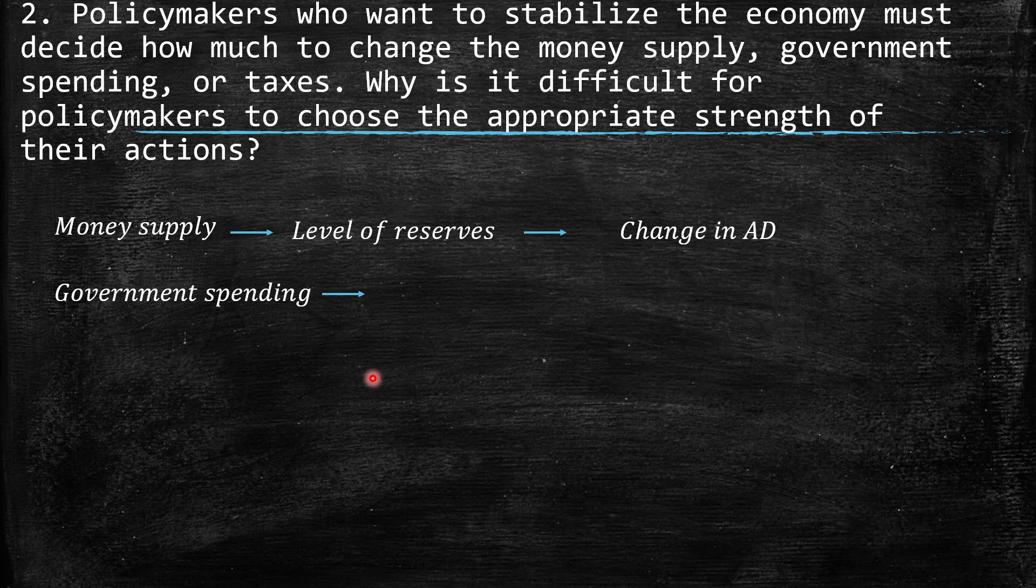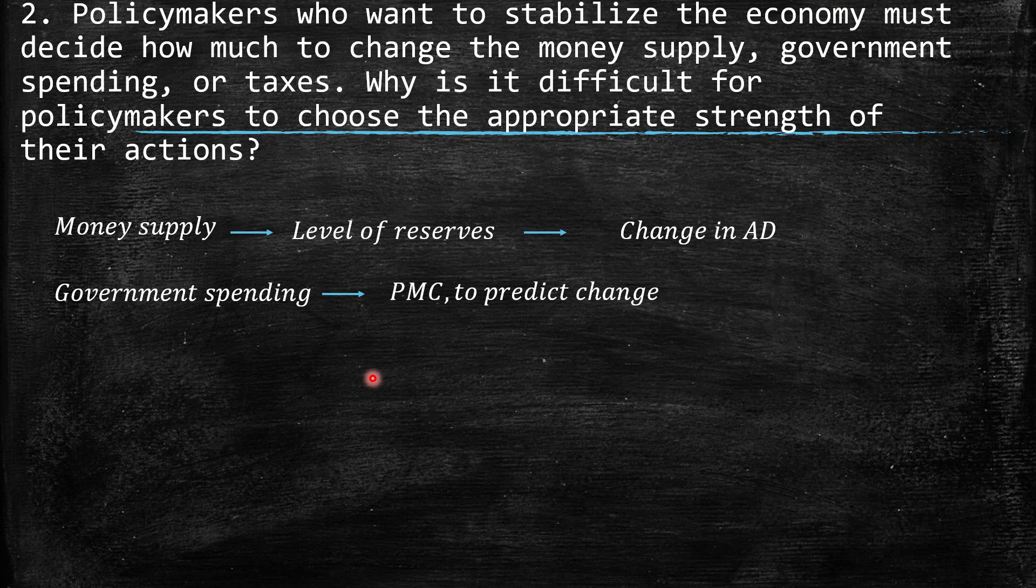When we talk about government spending, we know that there is a propensity marginal to consume, the PMC. And we have an estimation of a number, however, it can change over time. It can be even dynamic. So, until that situation, if you're thinking that the PMC is 0.5, but at the end of the day, when you put this money in the economy, the change is 0.8, then your impact on the aggregate demand should be lower because the propensity marginal to consume is higher than estimated. So, for this situation, it's kind of difficult to measure the strength of this policy.